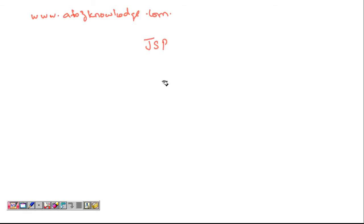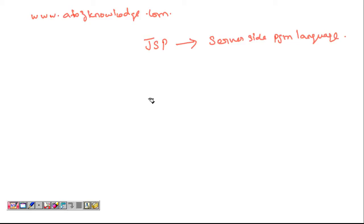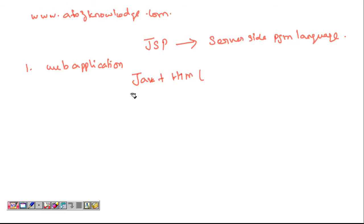JSP, a Java Server Page, is a server-side programming language especially used for web applications. We use this server-side programming language to create websites with Java-based technology. Simply put, JSP is all about Java plus HTML — the combination of a programming language Java and a markup language HTML. That combination we call JSP, a Java Server Page.